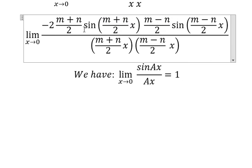So in this situation, sine of m plus n over 2x over m plus n over 2x equals 1. Similar for this one in here.